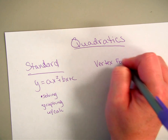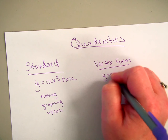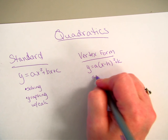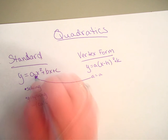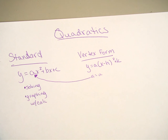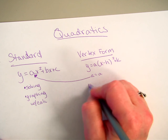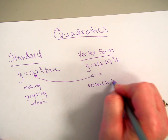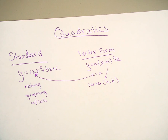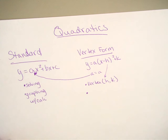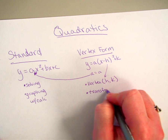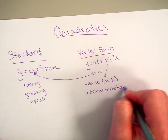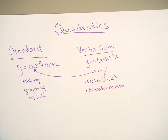We've talked about vertex form, which is y equals a times x minus h squared plus k. The 'a' is the same as in standard form — it changes your steepness, making it wider or steeper. Your vertex is the point (h, k); h changes sign value and becomes positive, while k stays exactly as it is. We can see the vertex and transformations quickly from vertex form.